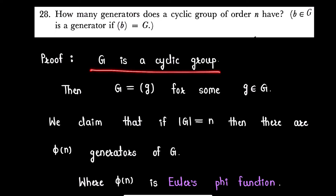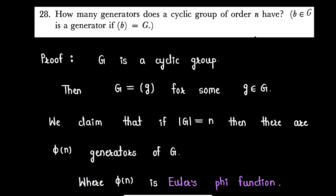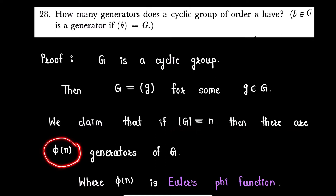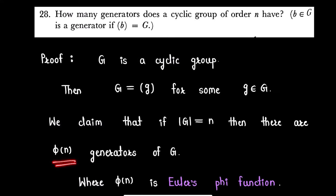For the proof: G is a cyclic group, so G will be generated by some element, say small g in G. We claim that if the order of G is n — that is, if G consists of n elements — then there are phi(n) number of generators of group G, where phi(n) is the Euler phi function.